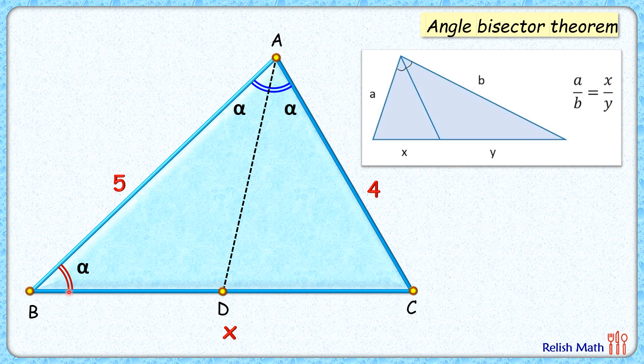Here we can say that side length BC will get divided in the ratio of 5 is to 4. That is, BD length will be 5/9 times x, and DC length will be 4/9 times x.